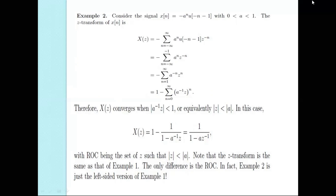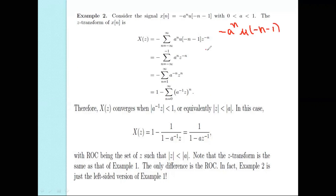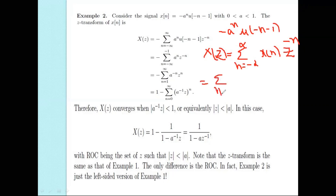The given signal for Example 2 is x(n) = -a^n·μ(-n-1). Using the definition, X(z) = Σ from n = -∞ to ∞ of x(n)·z⁻ⁿ. Substituting the given x(n): X(z) = Σ of -a^n·μ(-n-1)·z⁻ⁿ. Now we change these summation limits.